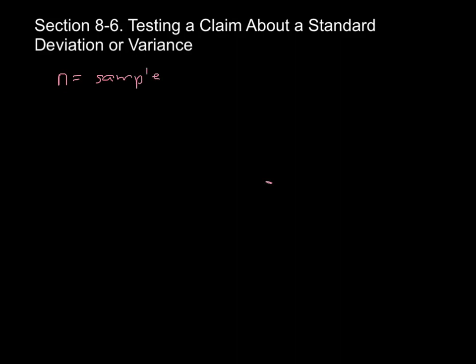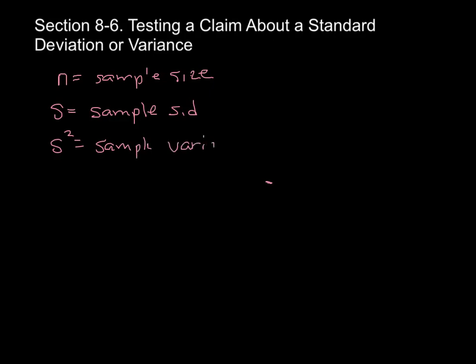Some notations that we're going to need to know — and there's not as many as there were in the previous sections. In this section, we're going to need to know what n is, and that is always our sample size. We need to know what s is — s is our sample standard deviation. s squared, if we're going to work with variance, is our sample variance. We also need to know our population standard deviation and/or our population variance.